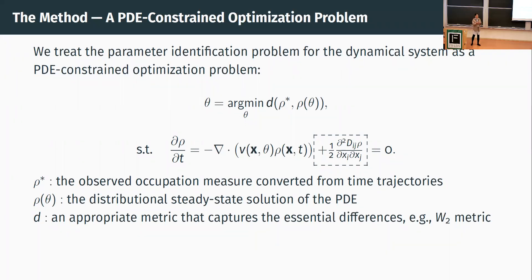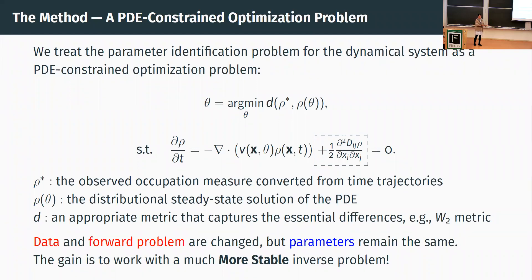Once we turn to PDE-constrained optimization, there are many mature techniques from the last several decades. The problem now is: given rho-star — my observed occupation measure converted from trajectories — minimize the loss subject to the constraint that theta yields a stationary solution to the continuity equation. A diffusion part can be added to model additional noise, acting as a modeling assumption or regularization if there is significant intrinsic noise in the original PDE. The data and forward problem are totally changed, but the parameter v remains the same. This gives a more stable framework for parameter identification compared to the ODE perspective.